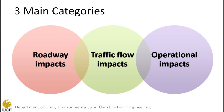The second category is traffic flow impacts, which can include traffic speed, travel time delay, speed variance, and roadway capacity. And the third being operational impacts, which can include vehicle performance, driver behavior, speed limit control, and traffic signal timing.